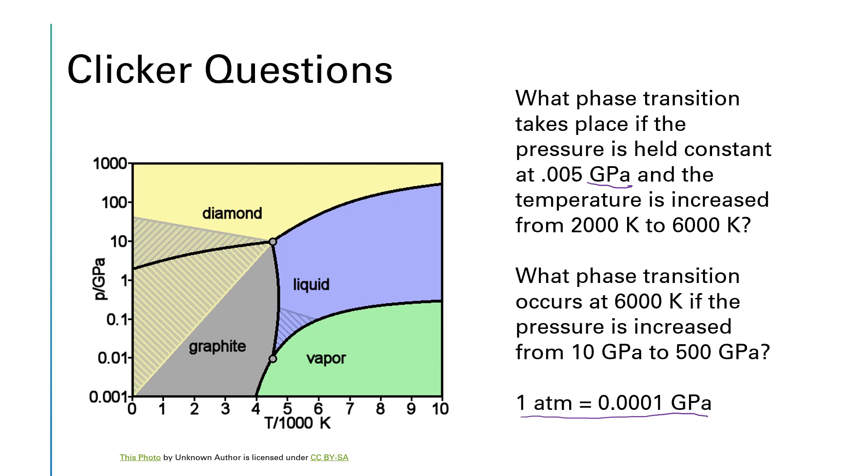Okay, so we're talking 0.005 gigapascals, which will be somewhere down, oh, I forget how these logarithmic scales work, but somewhere around in here. And let's see, the temperature is going to start at 2,000, which would be about here. And it's going to increase to 6,000.